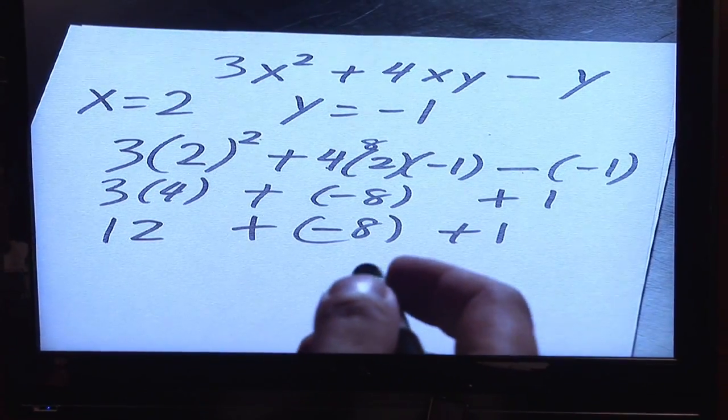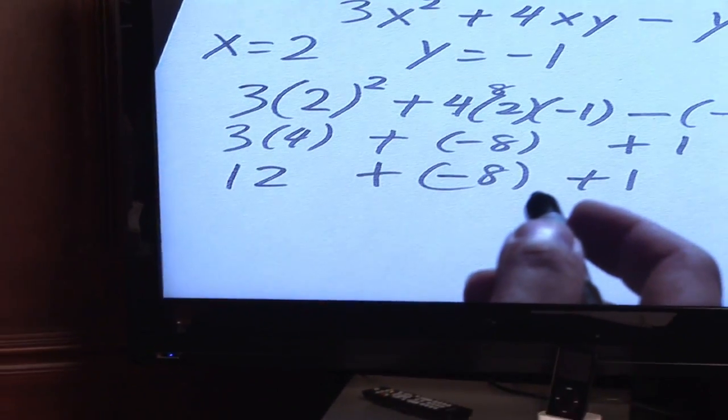The rest is pretty much history in that, like I said, you let the operations do the work for you, because 12 plus negative 8 is going to give you 4. And the last thing to do is to add the 1, and you and I both know what 4 plus 1 happens to be, and that's going to give you 5.